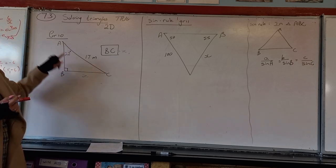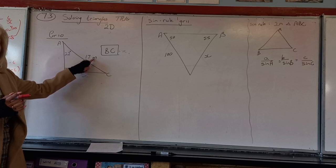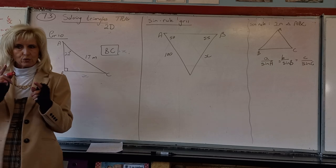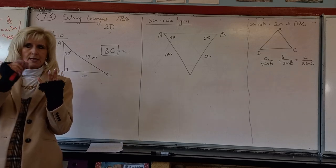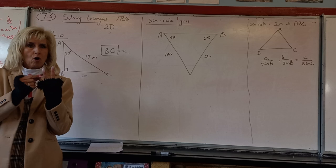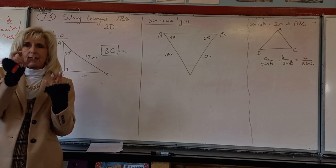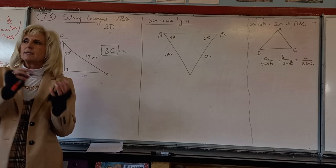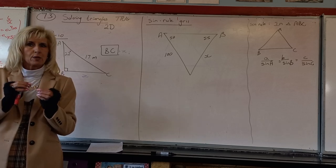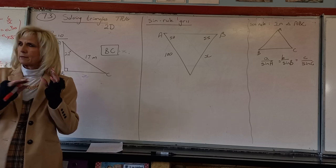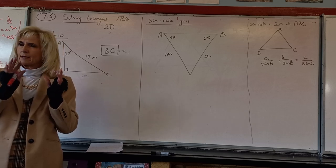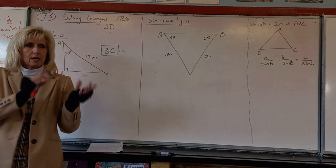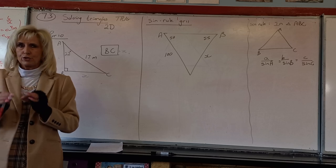We have 22 degrees and 17 meters — a side and an angle. In Grade 10 you were taught that sin, cos, and tan each involve three things in combination: the angle together with two specific sides. Sin is opposite over hypotenuse, cos is adjacent over hypotenuse, and tan is opposite over adjacent.